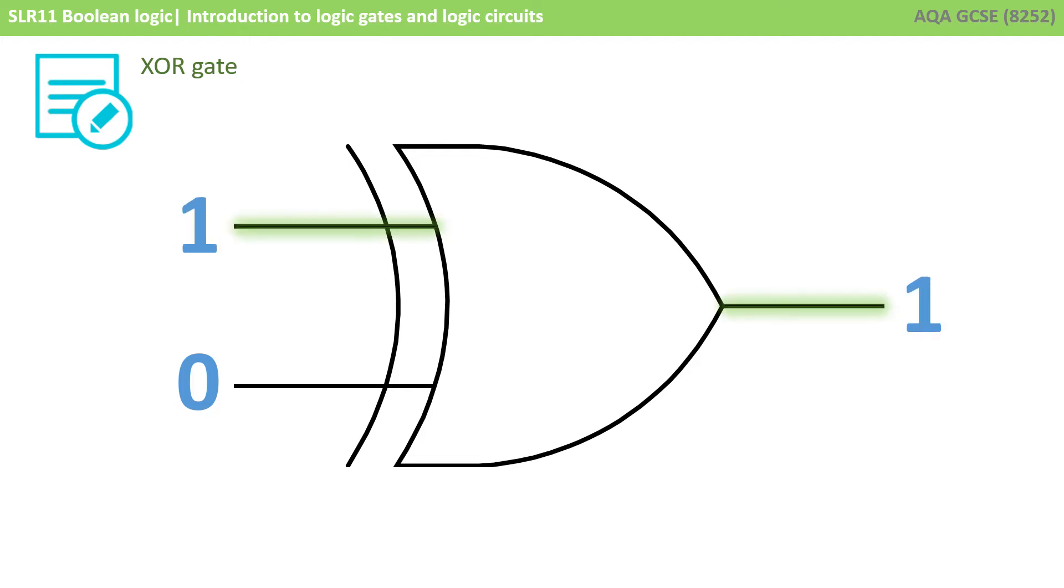If one input is 1 or true, then the output is 1 or true. Likewise, if we flip those inputs, so the first input is 0 and the second is 1, then the output is 1.